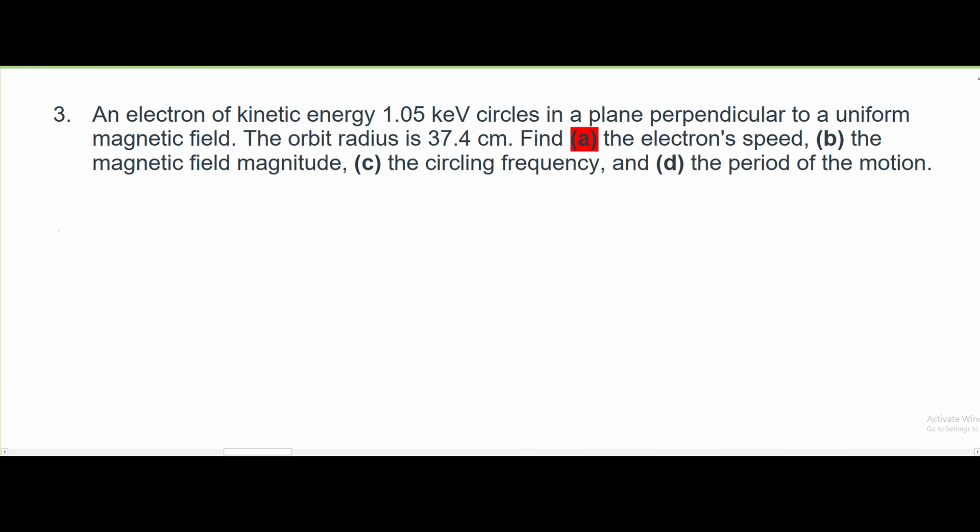Before we begin, we are going to write out all of the values that we're given. First, we have 1.05 keV, and this is going to equal our k value, which will become relevant in a second. We don't have a magnetic field, so there's no B, but we do have our orbit radius. We can say our radius subscript O equals 37.4 centimeters. This will have to be converted to meters for us to fully solve the problem, and now we can get into part A.